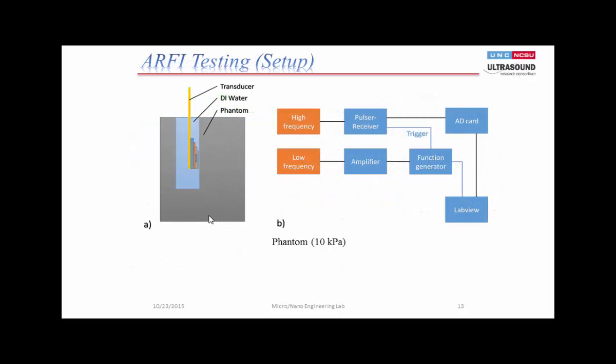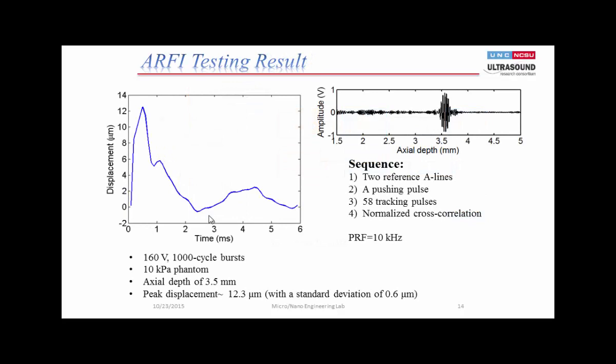For the radiation force test, we used a phantom with about 10 kPa modulus, placed in a water-filled holder. We drive the low-frequency transducer with a number of cycles, then track the phantom displacement using the 20 MHz tracking transducer. Driving at 160 volts with many cycles, at an actual distance of about 3.5 mm, we were able to track a peak displacement of about 12 micrometers. To us, that is very promising.